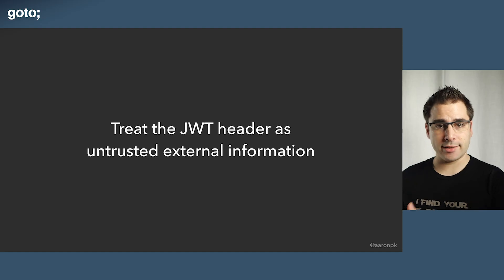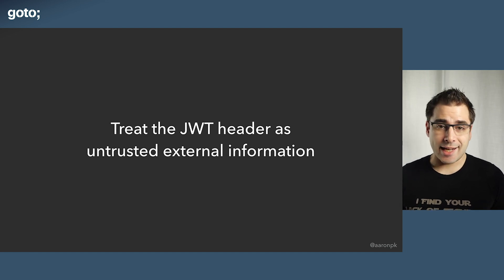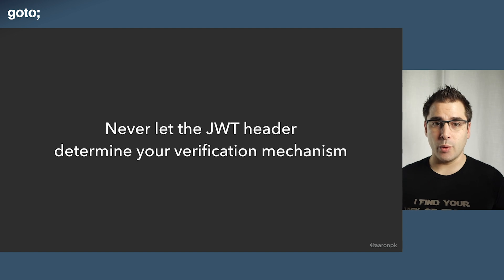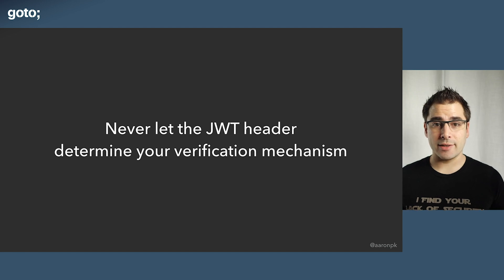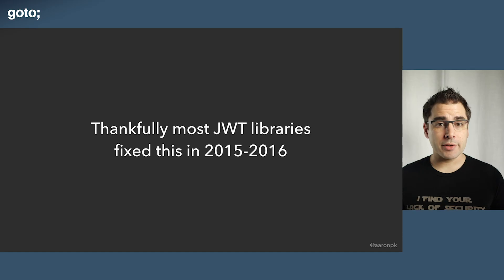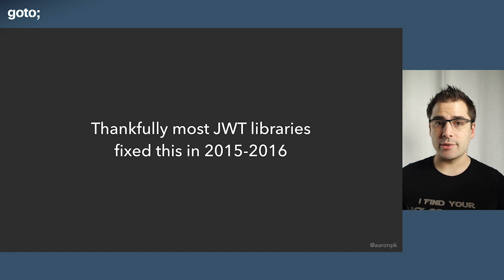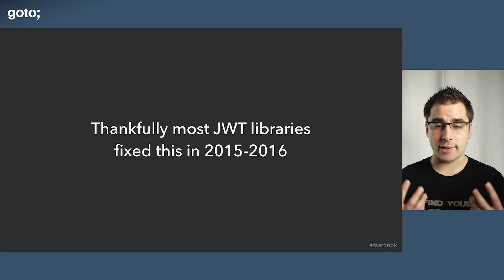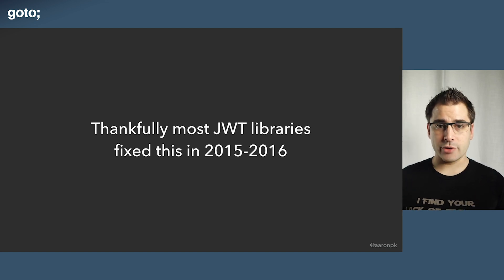The takeaway is that the JSON Web Token header, which talks about how to validate the token, is untrusted information before you validate the signature — and you have to treat it as such. Never let the header determine what signing algorithm is used. When you go to validate a JSON Web Token, only use signing methods that you know are safe and that you're expecting. Thankfully, most JWT libraries around 2015-2016 fixed this by requiring you to tell it which signing algorithms you are expecting when you validate a token, so you can't be tricked into accepting a signing algorithm from the header itself.